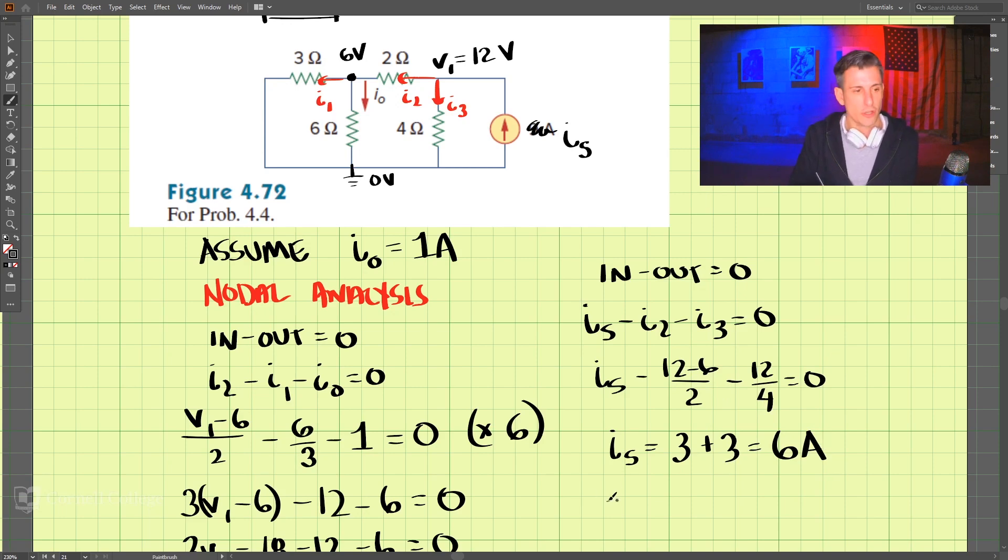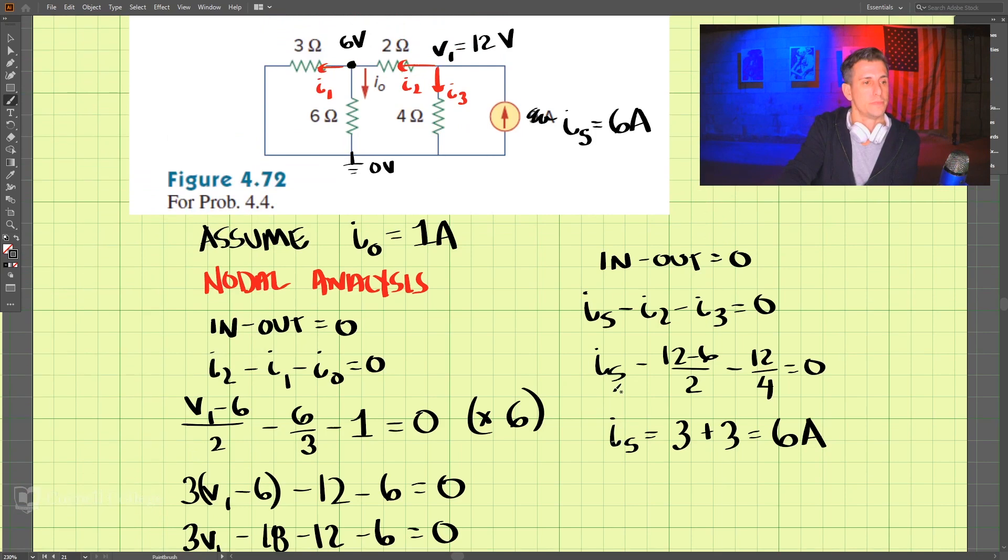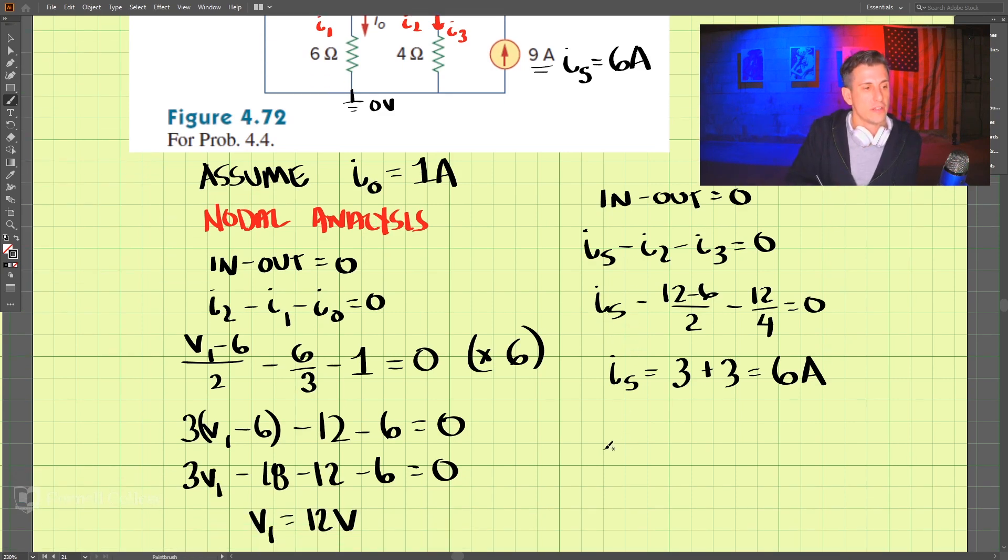So how do we solve this? Well, we know that the actual source is 9 amps. 9 amps divided by 6 amps is equal to 1.5, or 3 over 2. That is our k, our constant that we need to scale the circuit by.